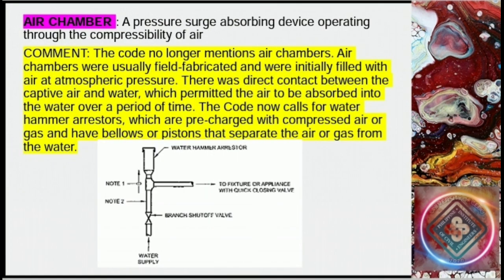Air chamber: a pressure surge absorbing device operating through the compressibility of air. Comment: the code no longer mentions air chambers. Air chambers were usually field fabricated and were initially filled with air at atmospheric pressure, with direct contact between the captive air and water, which permitted the air to be absorbed into the water over time. The code now calls for water hammer arrestors, which are pre-charged with compressed air or gas and have bellows or pistons that separate the air or gas from the water.